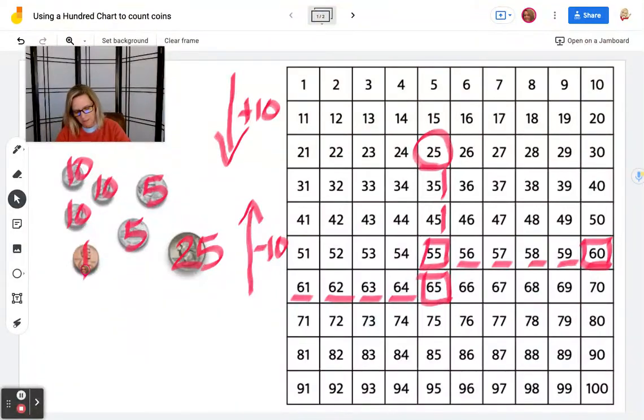And then I have one penny. So I just move one space to the right, and I have 66 cents.